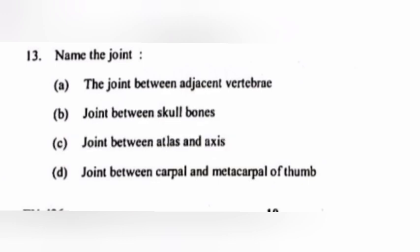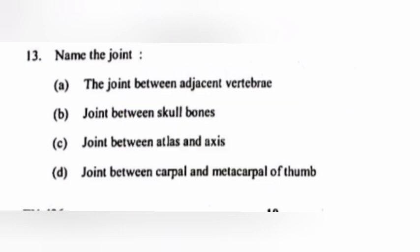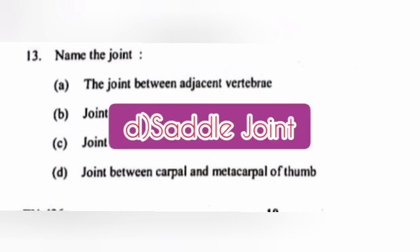C. Joint between atlas and axis. Answer: Pivot joint. D. Joint between carpal and metacarpal of thumb. Answer: Saddle joint.